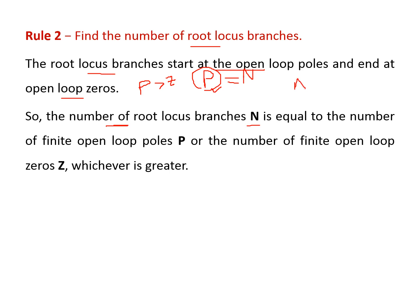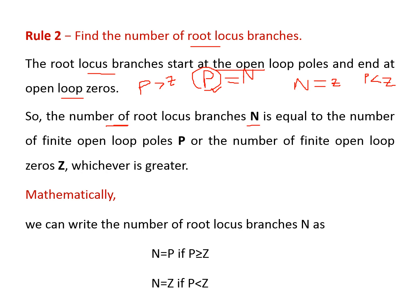Similarly, N equals Z — the number of root locus branches equals the number of zeros — if the number of poles is less than the number of zeros. So: N = P if P > Z, and N = Z if P < Z. These conditions determine the number of root locus branches, which start at open loop poles and end at open loop zeros.